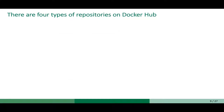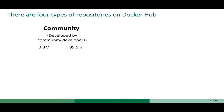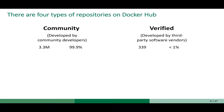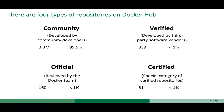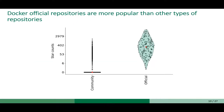There are overall four types of repositories on Docker Hub. First, we have community repositories, which are basically developed by community developers, and this is the majority of repositories available on Docker Hub. Then we have verified repositories, which are developed by third-party vendors such as Microsoft or IBM. Then we have official repositories, which are reviewed by a team from Docker. And finally, we have certified repositories, which are just a special category of verified repositories. For this study, we are going to focus on the official repositories, as these are more popular than other types.